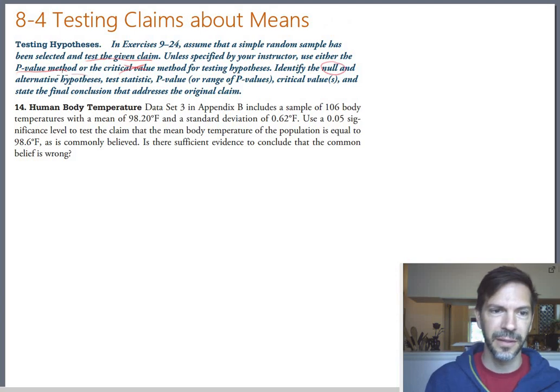We want to identify the null and alternative hypotheses, the test statistic, the p-value, not the critical values, a final conclusion that will either say reject the null or don't reject the null, and then a sentence that addresses the original claim.